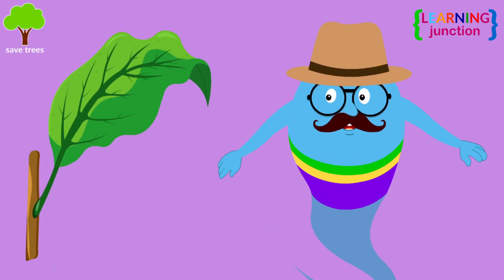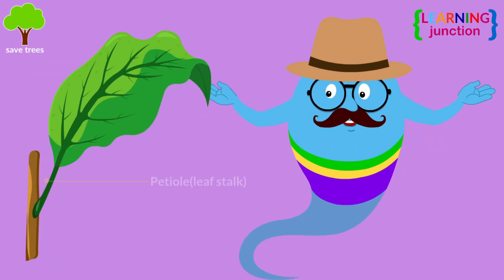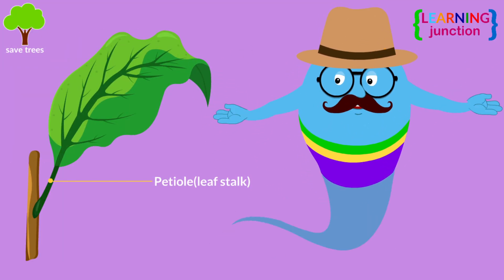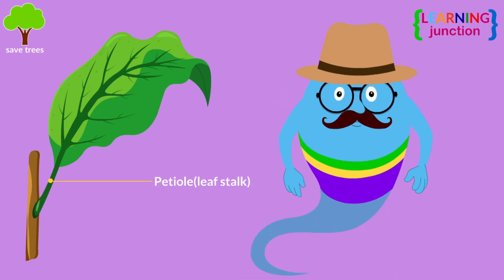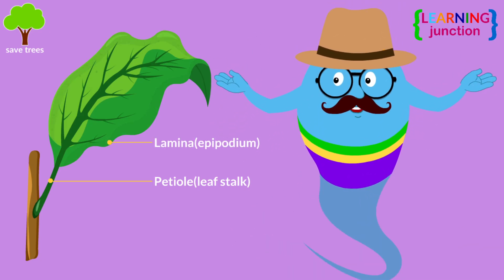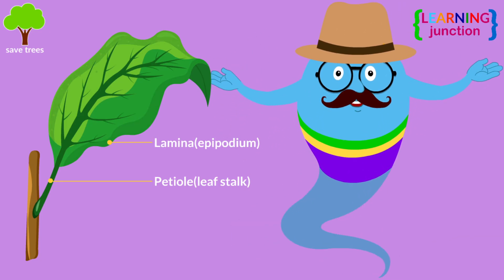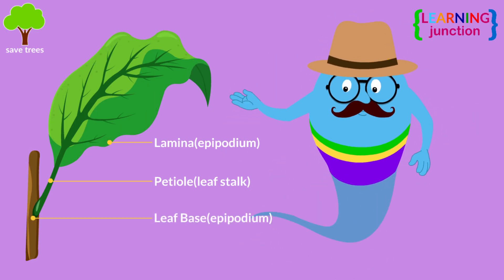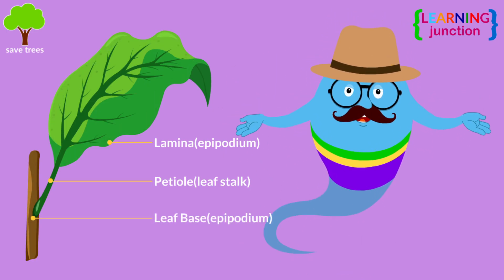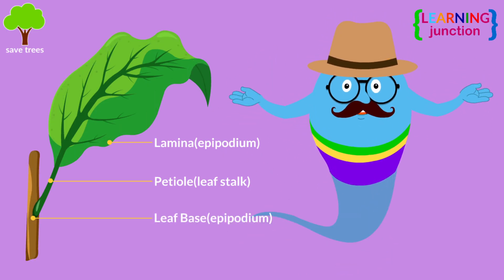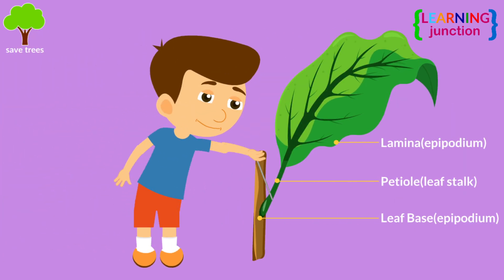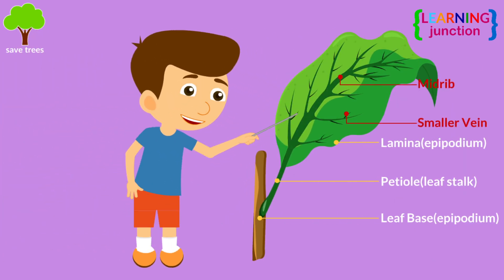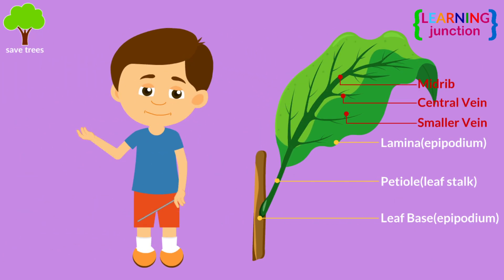A typical leaf consists of a petiole, a stalk connecting the leaf to the stem. Here is the lamina, where photosynthesis occurs. And this is the leaf base, which attaches the petiole to the stem. The lamina contains the midrib and smaller veins for transportation.